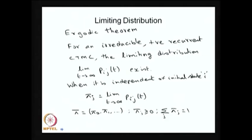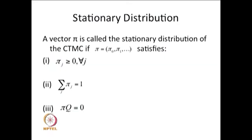Later we will give some examples of how to find the limiting distribution. I am explaining the stationary distribution also, the same way I discussed for DTMC applies to CTMC. If a vector satisfies these three conditions — probabilities greater than or equal to 0, summation equal to 1, and you can solve the equation to get the π's — it is a homogeneous linear equation. You need a second condition to have non-zero probabilities. So if you solve πQ = 0 along with summation of πⱼ = 1 and if this πⱼ exists, then the CTMC has the stationary distribution.